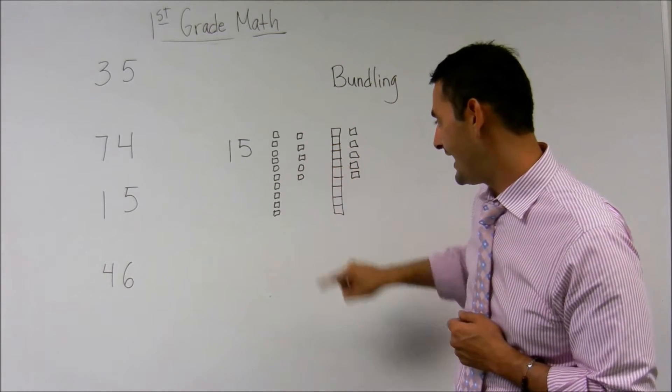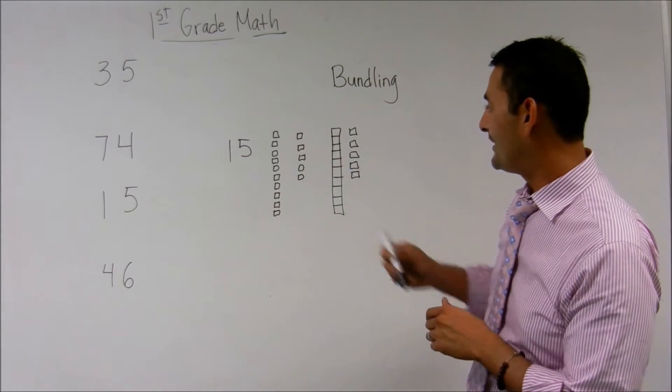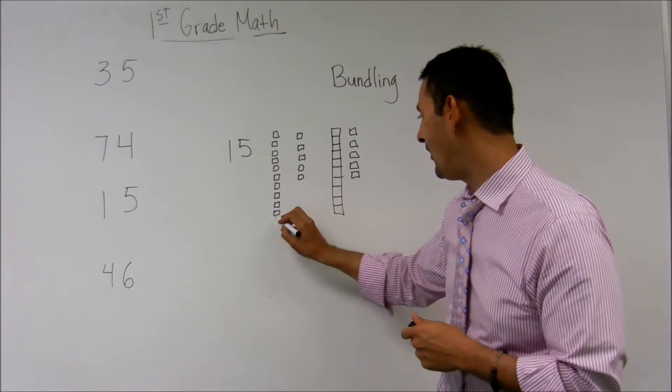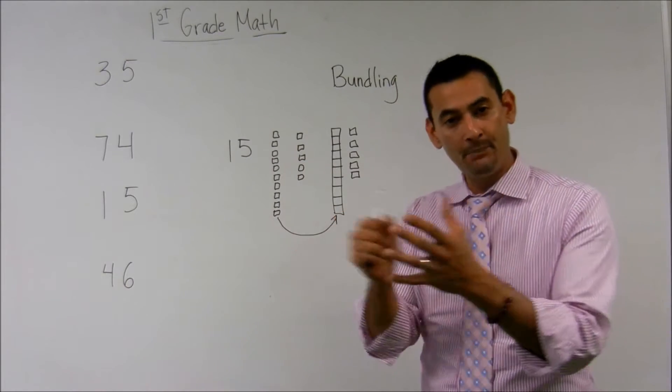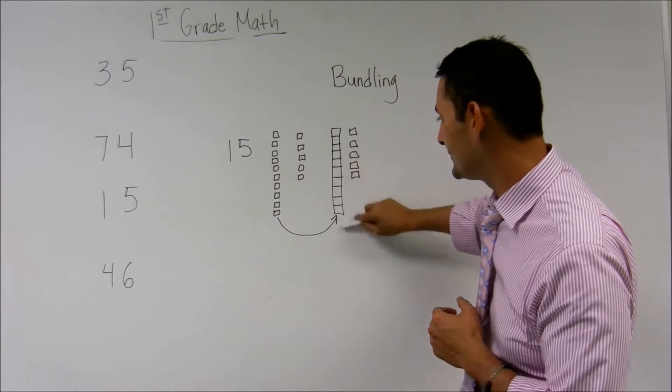One, two, three, four, five. Now, let's look at this example here, that we've actually bundled all of these together. We just bundled them, we put them together. We've bundled them until we make one tenth right here.